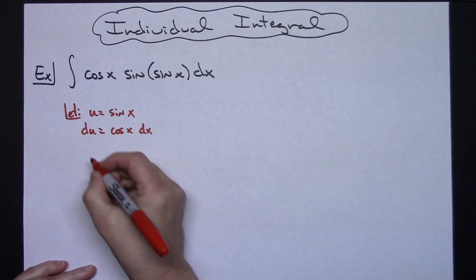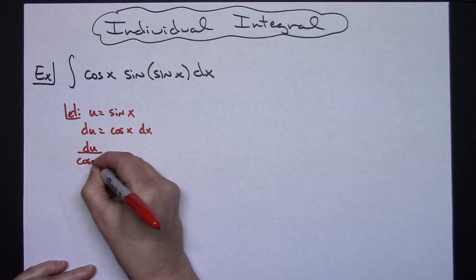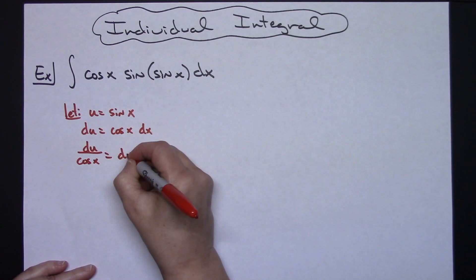We'll go ahead and solve for dx, dividing both sides by that cosine x. So we'll have a du over cosine x is equal to that dx.